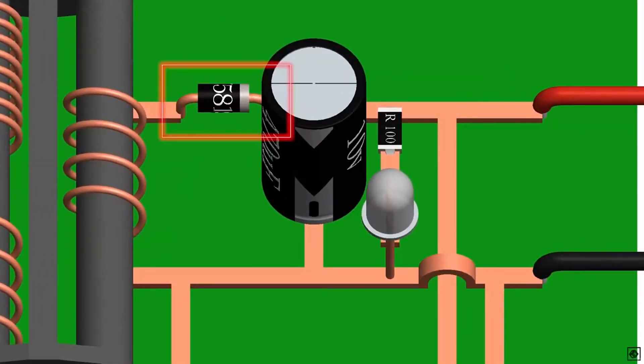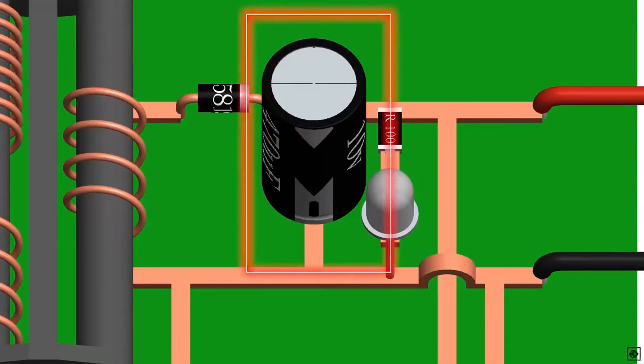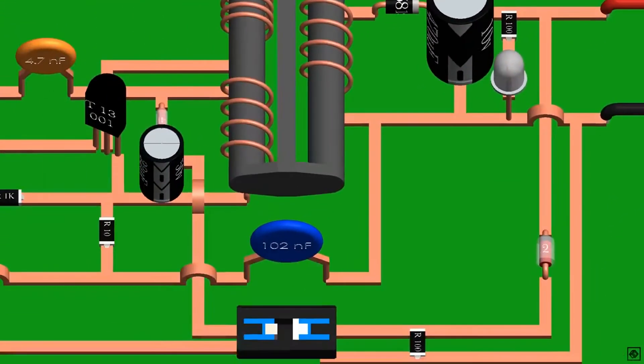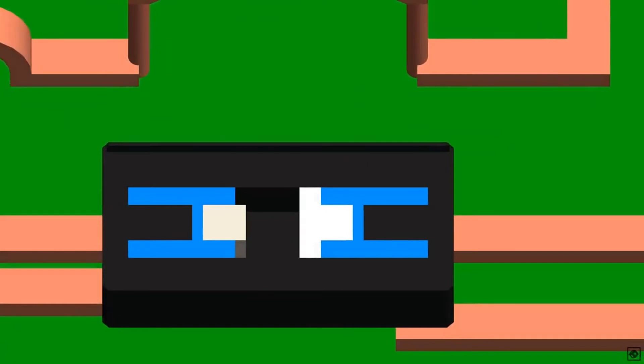For indication, there is also a feedback circuit that consists of an optocoupler PC817C and 4.2 volt Zener diode. This is an optocoupler. It is used for transmission of signal without contact. On the right side we have an infrared LED and on the left is a photo transistor. When the LED turns on, its light turns on the base of the photo transistor, turning it on.